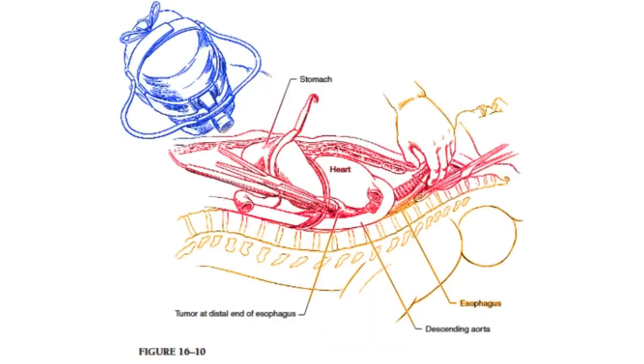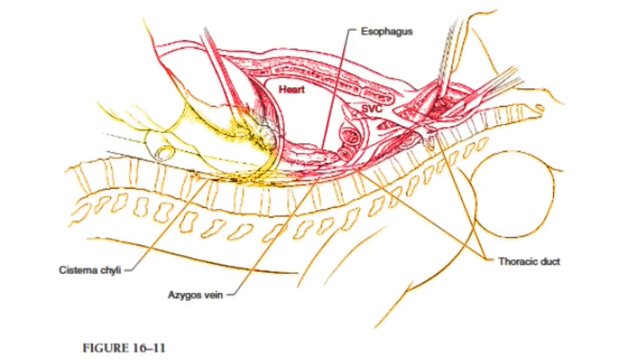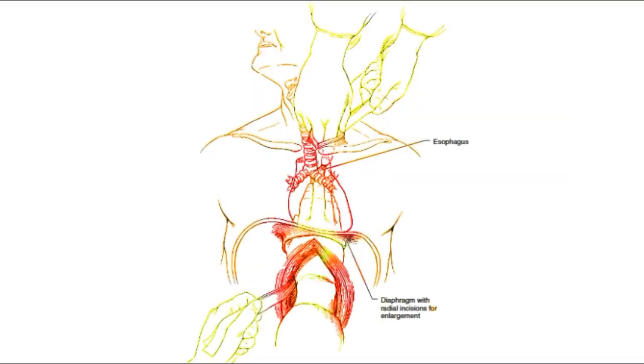Now that the proximal and distal esophagus is mobilized, the transhiatal dissection is begun to fully mobilize the remaining esophagus. Continuous traction is placed on each of the Penrose drains encircling the ends of the esophagus while the surgeon bluntly develops the prevertebral plane with his or her right hand through the hiatus and left hand through the cervical incision. Figure 16-10. A Penrose drain is looped around the esophagus and retracted superiorly while blunt dissection of the esophagus is continued to the level of the carina. Dissection can be performed under direct vision through the enlarged hiatus by blunt finger dissection or using a thoracoscope. Figure 16-11. A sponge on a stick can help facilitate this dissection from the cervical incision.